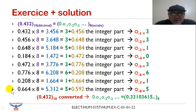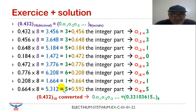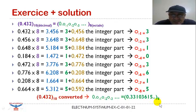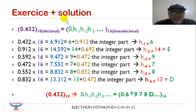We continue the operations. Here we stop at the operation which gives 5 plus a fractional number, so a minus 8 is equal to 5. The final result: 0.432 in decimal system converted to octal gives this result.